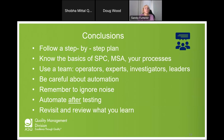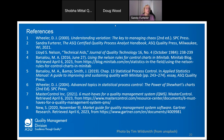In conclusion: follow a step-by-step plan, really know your process, and understand what SPC is telling you. Leverage operators — they have the most process knowledge; an improvement team without operators won't get all the root causes. Be careful about automation; sampling still has full statistical value and you don't have to use every data point. Automate after testing, then revisit and review what you've learned and change things up periodically. All references are provided.